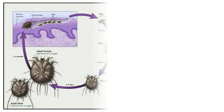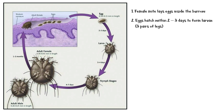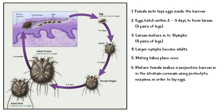This image shows the complete life cycle of the scabies mite. The female mite lays eggs inside the burrow she made within the stratum corneum. The eggs hatch within two to three days to form larvae, which have three pairs of legs. The larvae then mature into nymphs, which have four pairs of legs. Finally, the larger nymphs become adults. Mating takes place only once, and the female is fertile for the rest of her life. The mature female makes a serpentine burrow in the stratum corneum using proteolytic enzymes in order to lay eggs and start a new cycle.